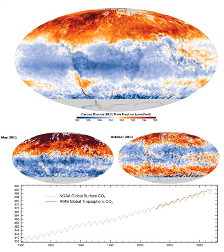Plants and other phototrophs use solar energy to produce carbohydrate from atmospheric carbon dioxide and water by photosynthesis. Almost all other organisms depend on carbohydrate derived from photosynthesis as their primary source of energy and carbon compounds.